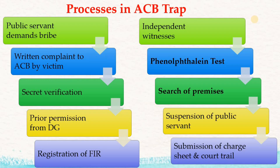When the ACB officer gets a written complaint from the victim, the ACB officer asks the victim to arrange the currency notes. In the meantime, the ACB officer will start a secret verification to check the background of the victim, the bribe taker, and the relation between the victim and bribe taker. After completion of secret verification, the officer has to get permission from the Director General of ACB if the public servant is a state or public sector undertaking employee or private citizen.